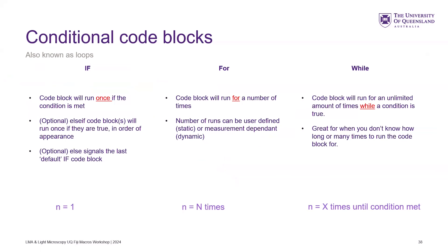On to loops — there are different types you can run. Conditional code blocks: you can have an if segment, which will run once if the condition is met. You can have optional extra else if code blocks, which will only run once if true, in the order placed. And then a final else that defaults. For loops run a set number of times — user-defined or dynamic based on how many results you have. While loops run an unlimited amount of times while the condition is true.